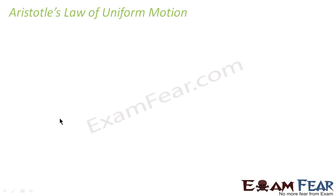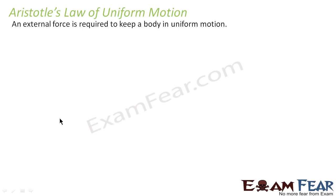The first law given to describe the cause behind uniform motion was given by Aristotle, popularly known as Aristotle's law of uniform motion. This law stated that an external force is required to keep a body in uniform motion. That means when a body is in uniform motion, an external force has to be present continuously — as long as an external force is present, the body will be in uniform motion.